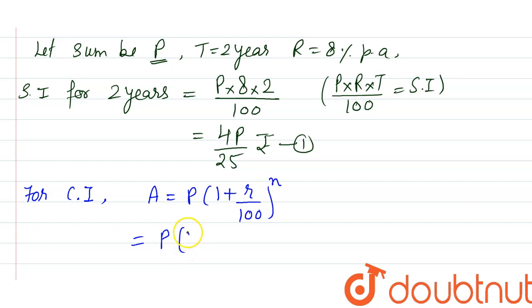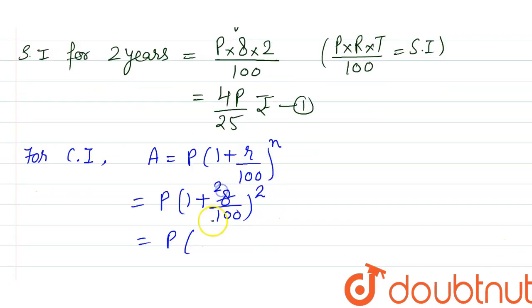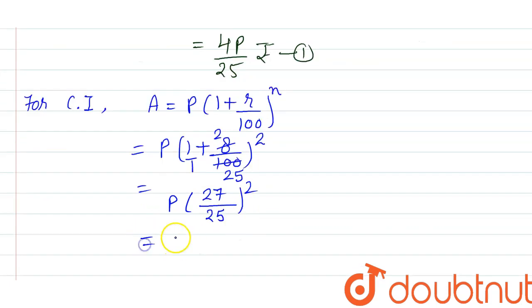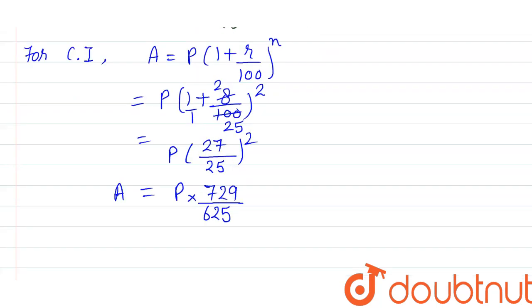principle P, sum we don't know, rate of interest is 8%, and duration is 2 years. Let's simplify this by 4, it is 2/8 and this is 25. Compound interest we are getting A = P×729/625.